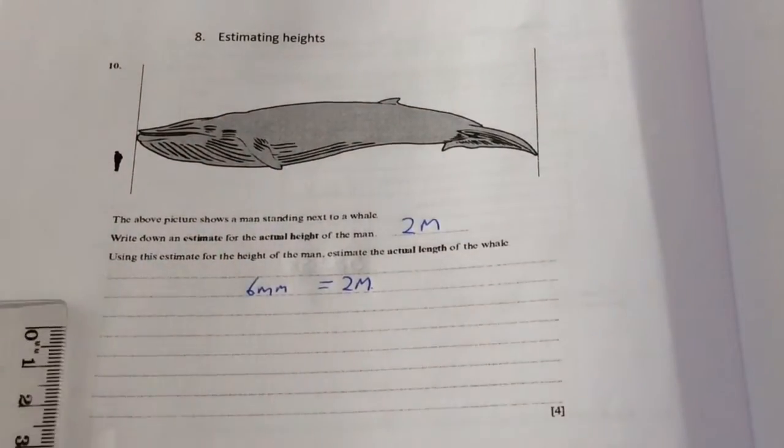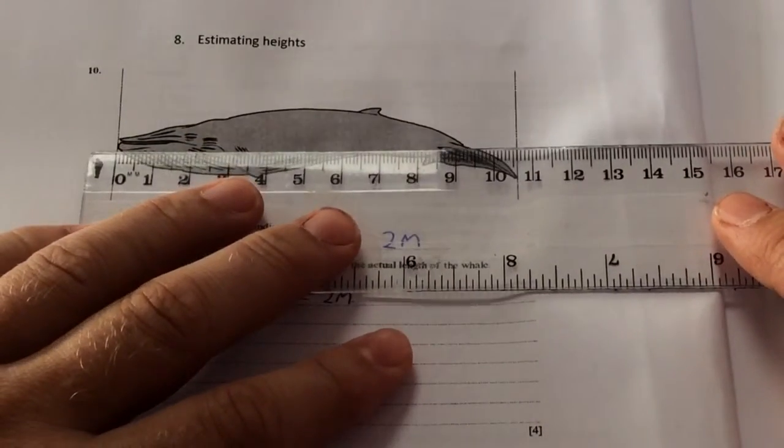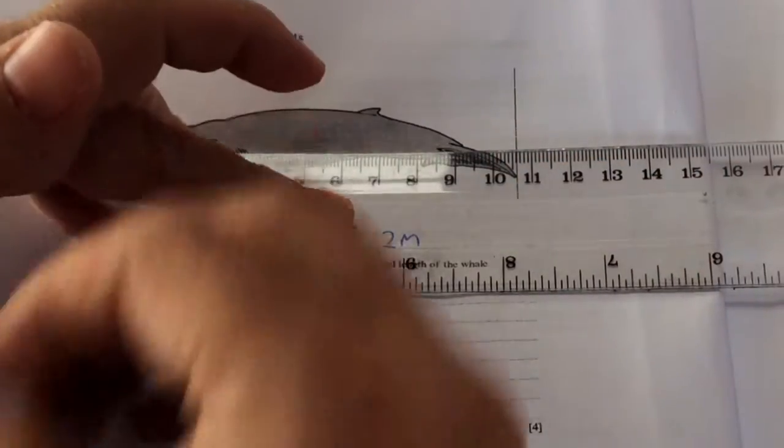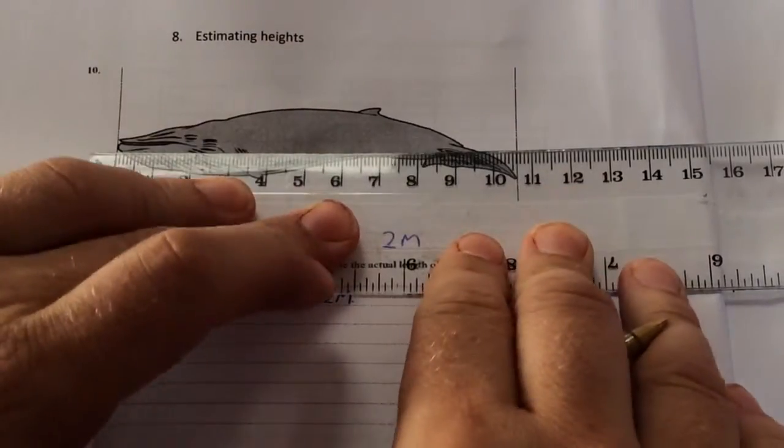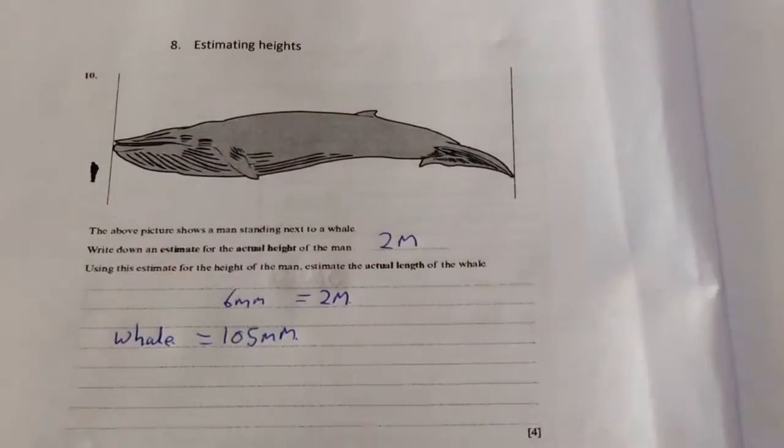What I need to do now is estimate the actual length of the whale. So I'm going to measure the length of that whale all the way across. And the whale comes up on mine as 10.5 centimetres. Because I'm working in millimetres it's 105 millimetres.